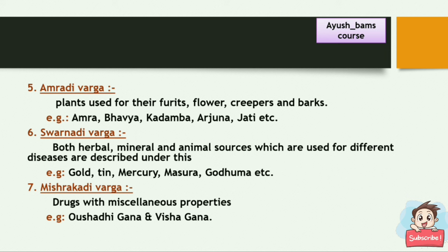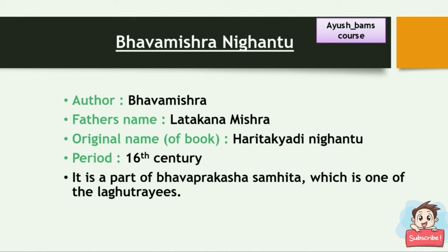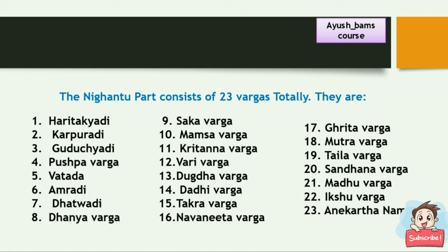Now we discuss Bhavamishra Nighantu. The author is Bhavamishra, and his father's name is Latakana Mishra. The original name of this book is Haritika Adiv Nighantu. It belongs to the 16th century and is a part of Bhavaprakash Samhita, which is one of the Lagutres. The Nighantu part consists of 23 Vargas totally.